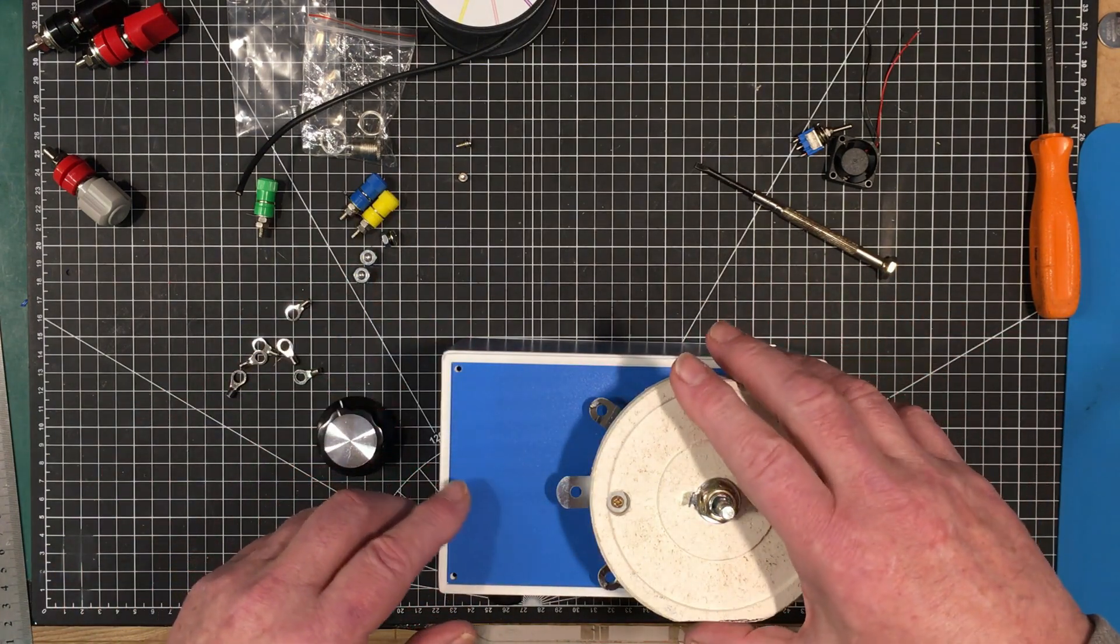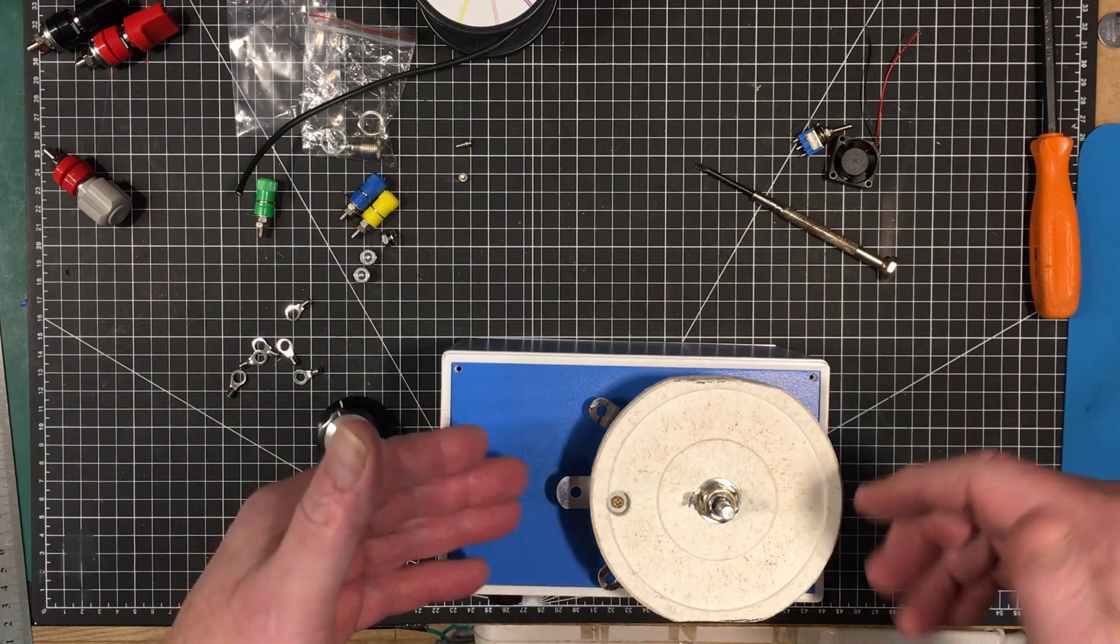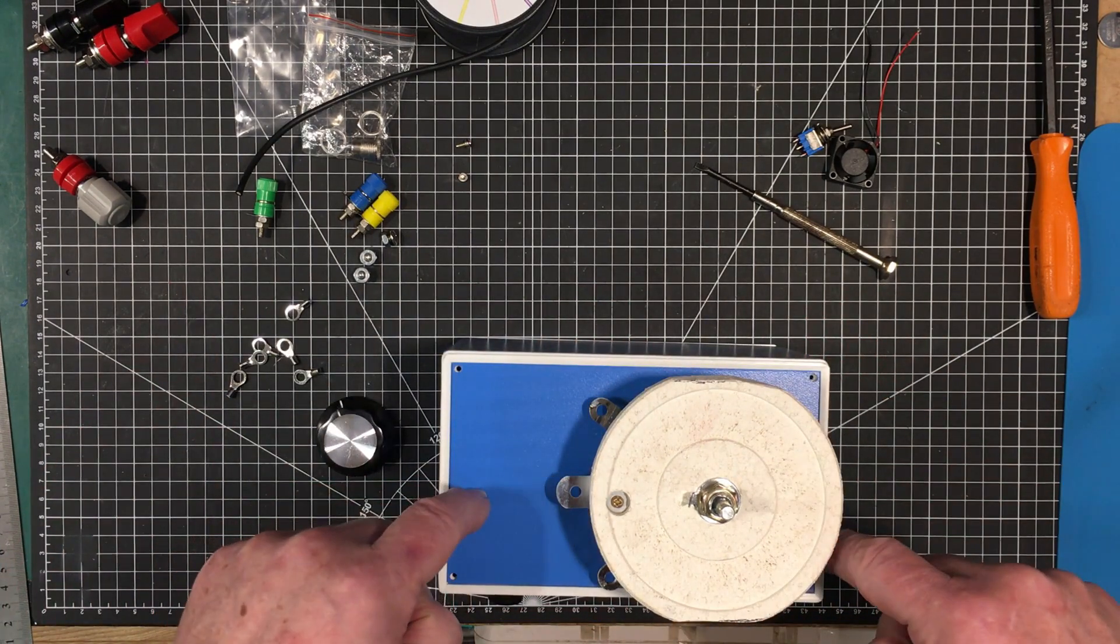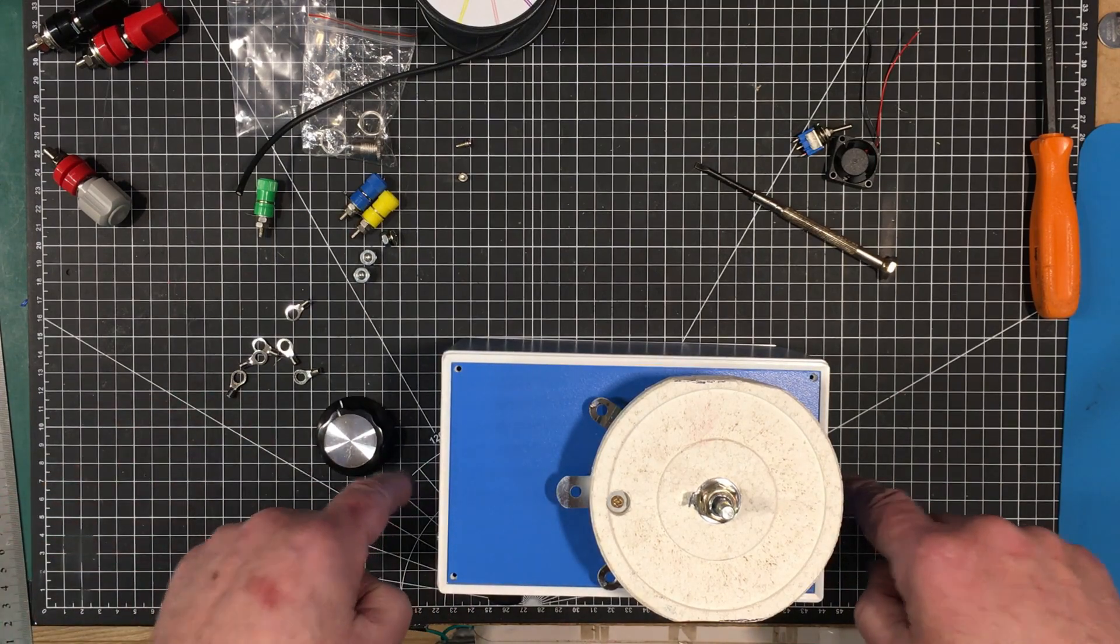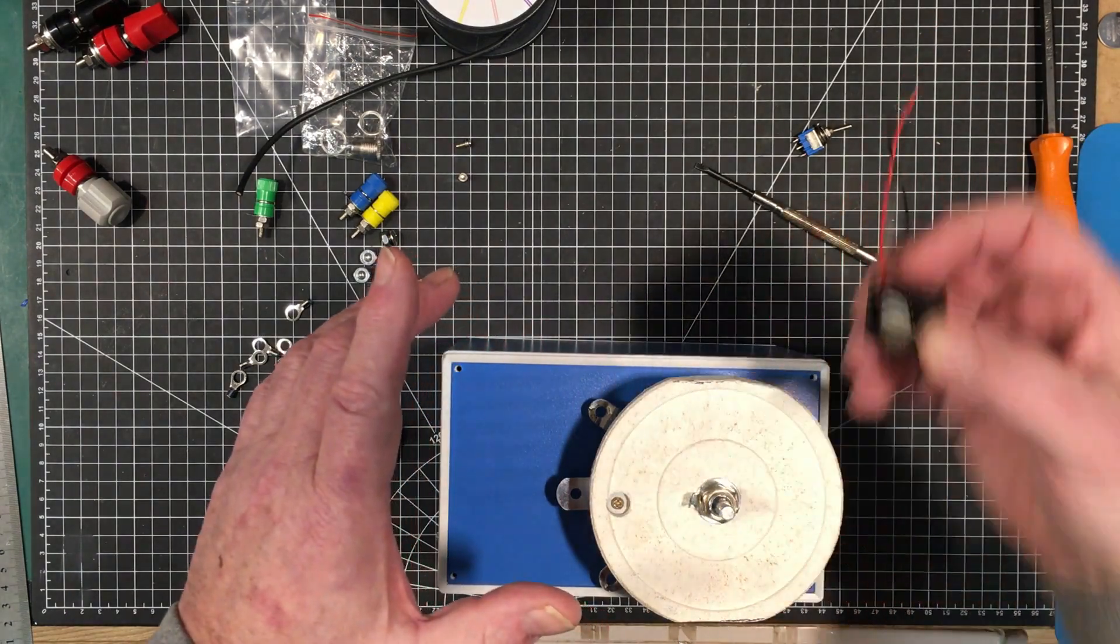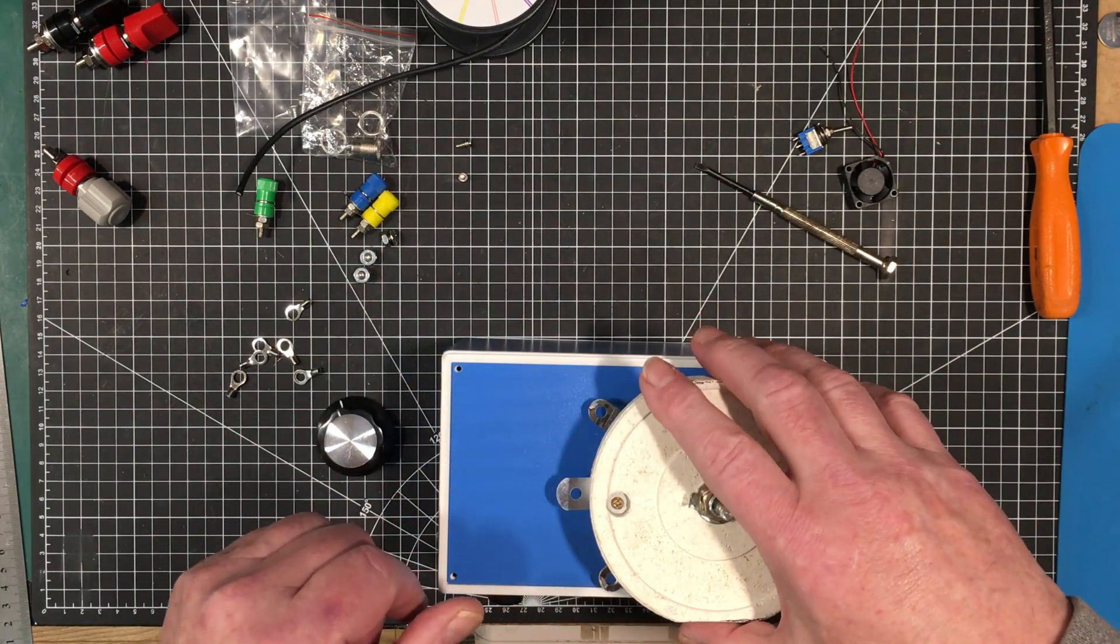I'm going to mark out the hole for this, get it drilled. When I drill this panel I'm going to drill the back panel in the exact same spot so that little fan is centered directly behind the pot.